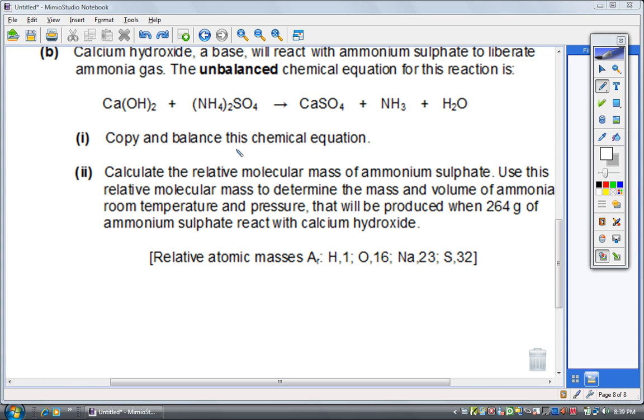First question requires us to copy and balance this chemical equation. To balance a chemical equation, we will look at individual elements or individual anions to see if they are balanced between the left-hand side and the right-hand side of the equation. Calcium, in this case, is balanced because we see one calcium on the left-hand side and one calcium on the right-hand side.